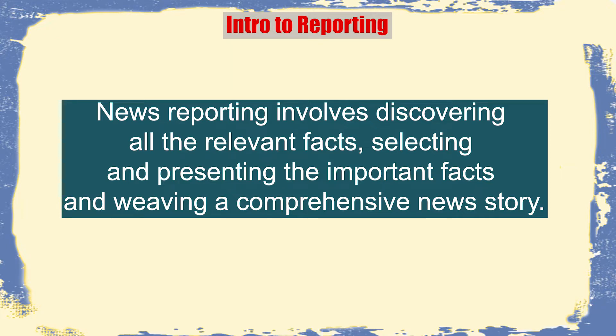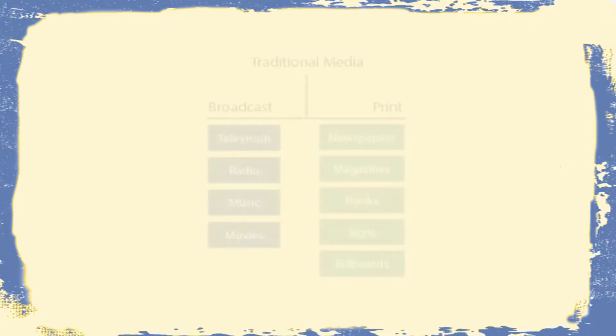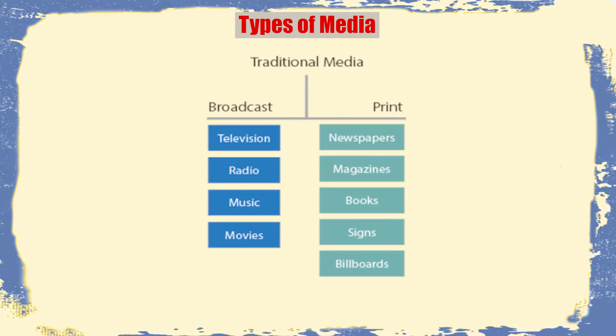News reporting involves weaving a comprehensive news story. The type of news story and how it would be reported depends on many factors — one very important factor is the type of media for which the news story is being written or shot. We can divide media into two broad divisions: traditional media — that is, newspapers, magazines, radio, television, books, signboards — everything we have known since ages.